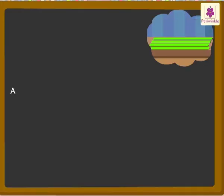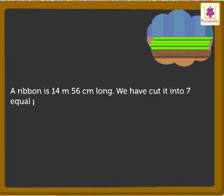A ribbon is 14 meters 56 centimeters long. Look, we have to cut it into 7 equal pieces. What is the length of each piece of the ribbon?